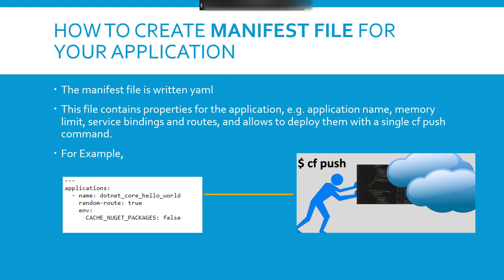In this sample manifest.yaml, the application name is a dotnet core Hello World program. I'm creating a random route for now — I'll show you how to create a static route as well. I'm also setting an environment variable: CACHE_NUGET_PACKAGES=false. NuGet is a dependency manager for .NET applications, similar to what Maven does. I'm setting it to false to avoid conflicts between the NuGet feed and the local NuGet cache.